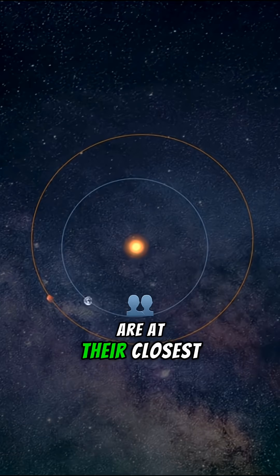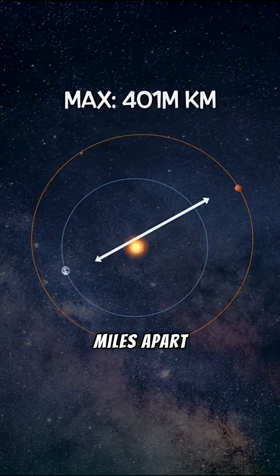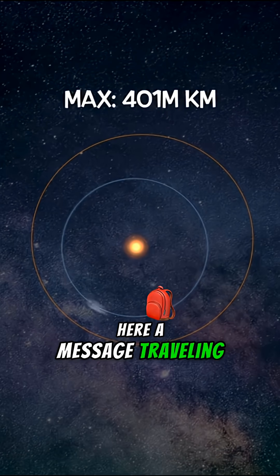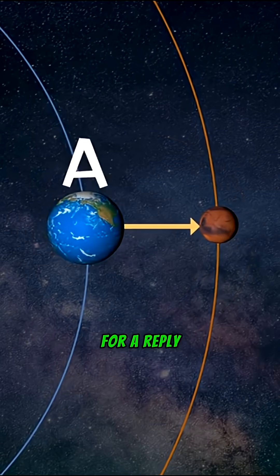When Mars and Earth are at their closest points to one another, they are 34 million miles apart. Here, a message traveling at the speed of light would take about three minutes to get to Mars and another three for a reply.